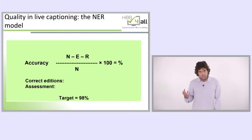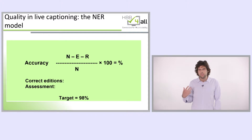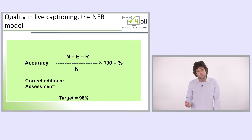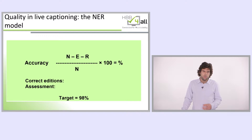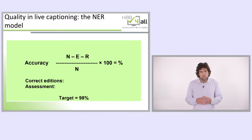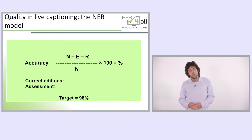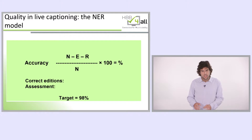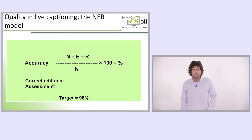The accuracy rate should not be taken as the be-all and end-all in terms of quality. There is also a section where correct additions are included, and especially an assessment. The quality of a set of subtitles analyzed will be a combination of what the assessment says and the figure given as a percentage accuracy rate. In any case, the target should be no less than 98%, which is the threshold used for subtitles that are at least of acceptable quality.